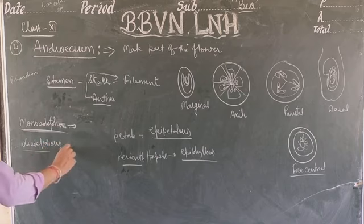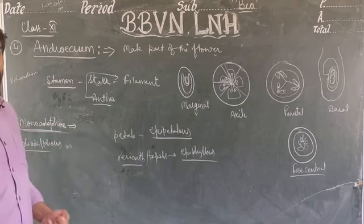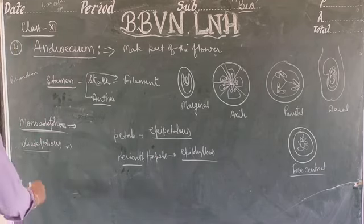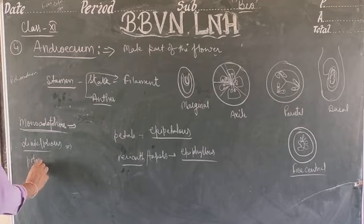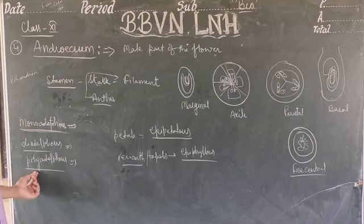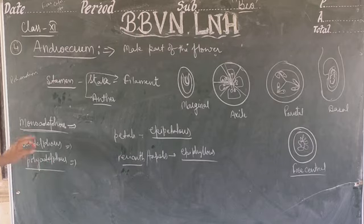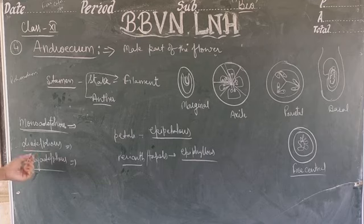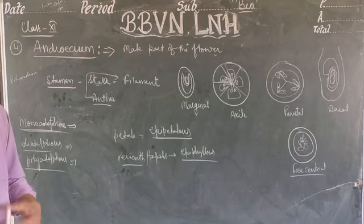Diadelphous means the stamens are fused in two separate bundles. If the stamen is fused in two separate bundles, it is known as diadelphous. Polyadelphous means the stamen is fused into more than two or three separate bundles, and is known as polyadelphous stamen.